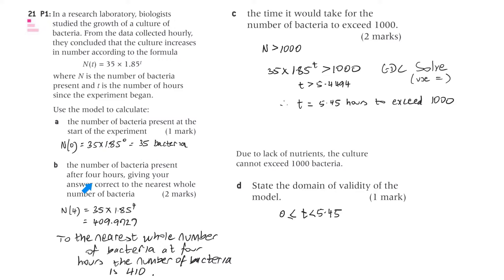Part B, the number of bacteria present after four hours, giving your answer correct to the nearest whole number of bacteria. So we do the same. Four hours. Now remember, note that that is already in hours. We've got the t's number of hours. That's 35 by 1.85 to the power of 4, and that's 409.9727. So the nearest whole number of bacteria at four hours, the number of bacteria is 410.